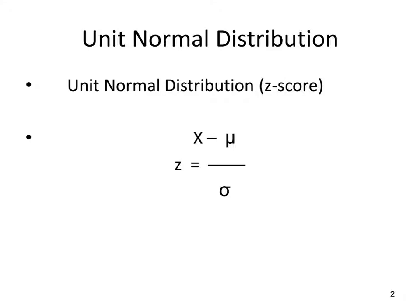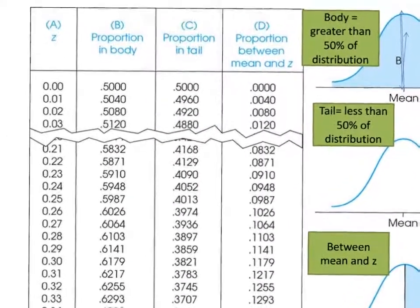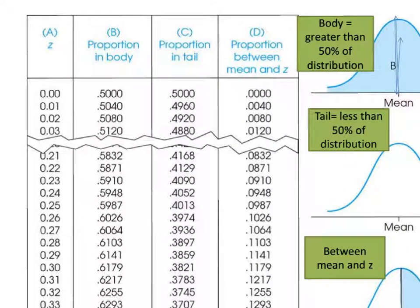We're going to look at the unit normal distribution, which is also called the z-score table. Z is made up of the raw score minus the mean divided by the standard deviation. In the z-table, z values are listed from 0 all the way to 4, and we have columns B, C, and D. B is proportion in the body, C is proportion in the tail, and D is proportion between mean and z.